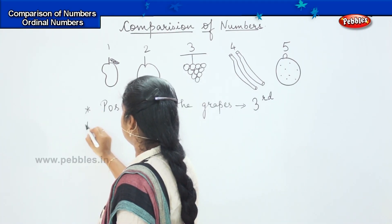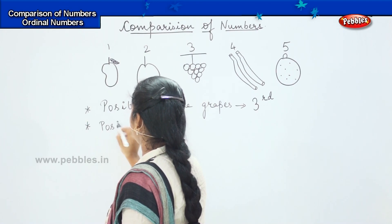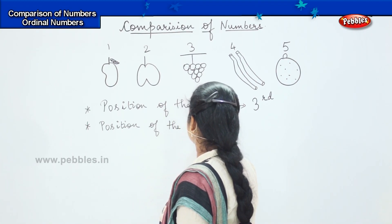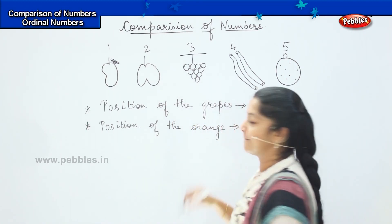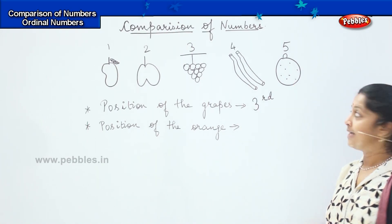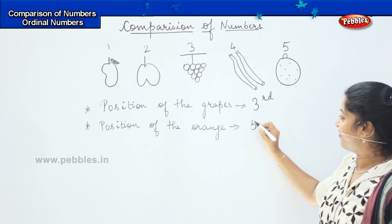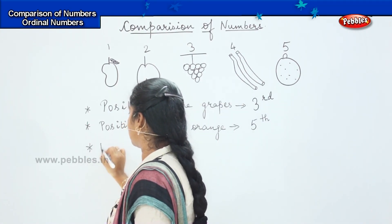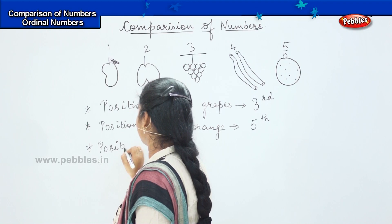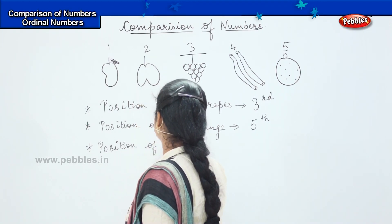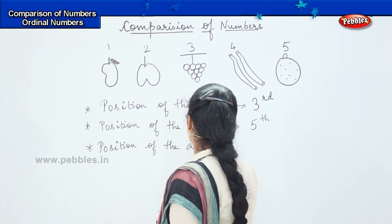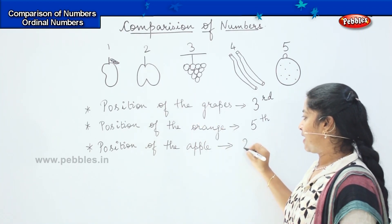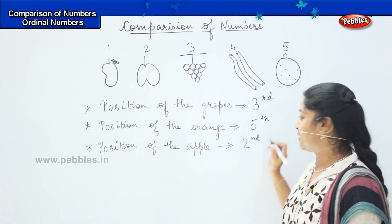Can you tell me the position of the orange? See the picture and tell me the position of the orange. Yes — it is number five, so we write five and 'th' towards the top, which is fifth. Next, tell me the position of the apple. Where can you see the apple in the given picture? It is the second one — so my answer will be 2nd, which is second.